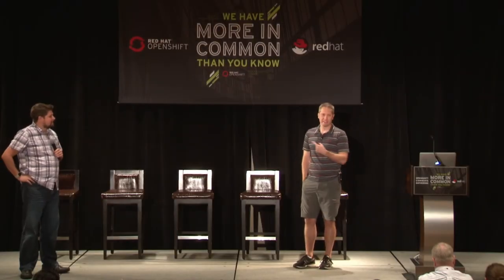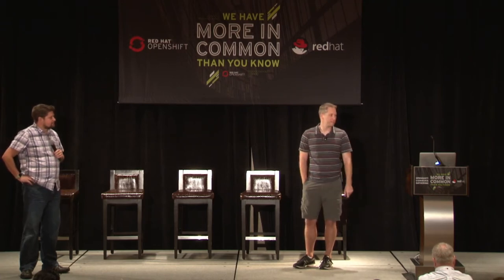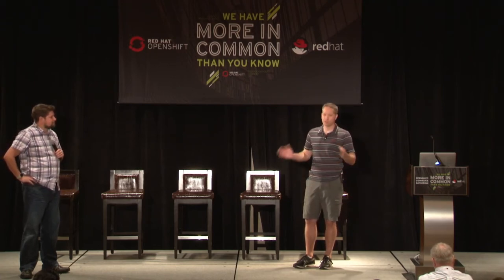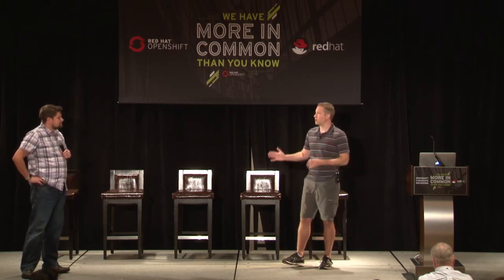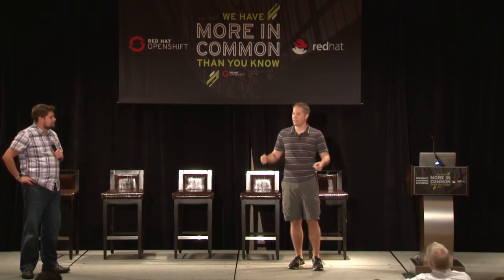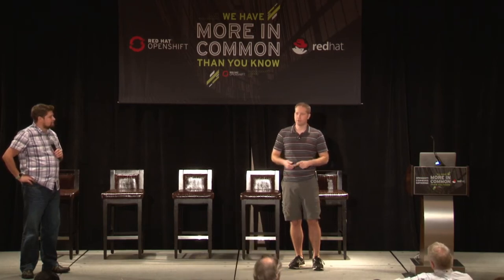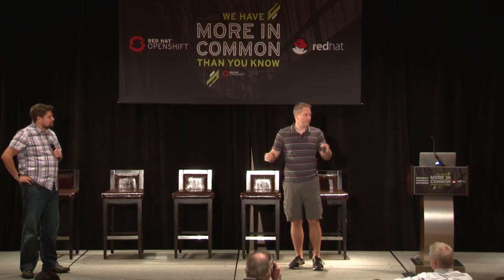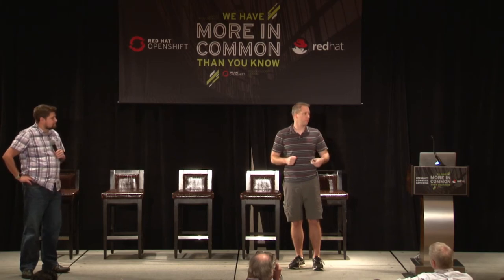Mike and I are going to tag team this — I'm on the architecture side, Mike's on the product management side. OpenShift is a platform; Kubernetes is what we think of as a kernel, and the analogy really applies to the idea of a distribution. Today you get your Kubernetes, add a few things, and everything works great — but the future is much more complicated than that.